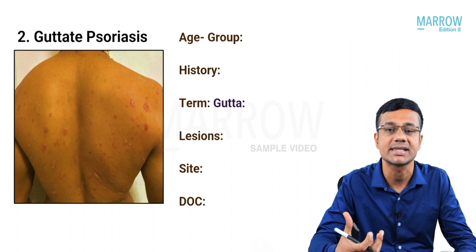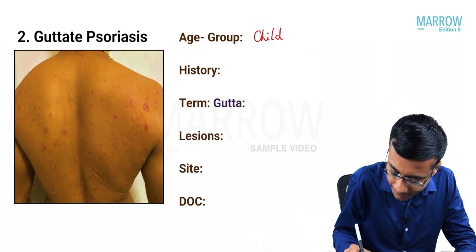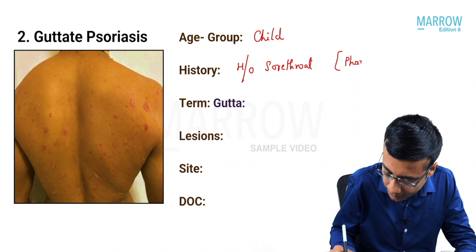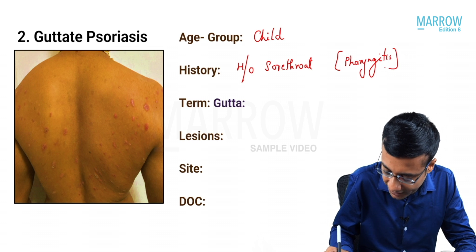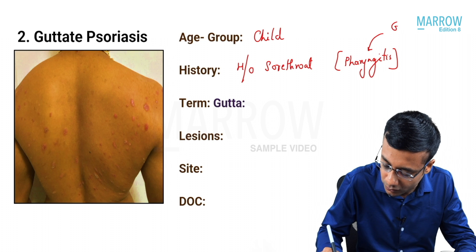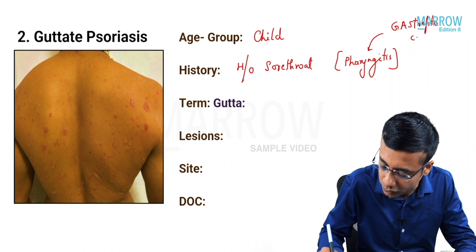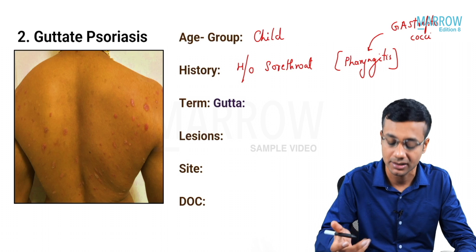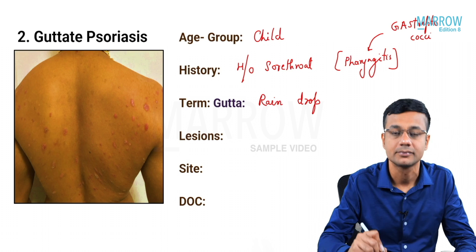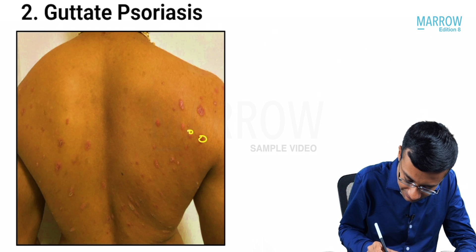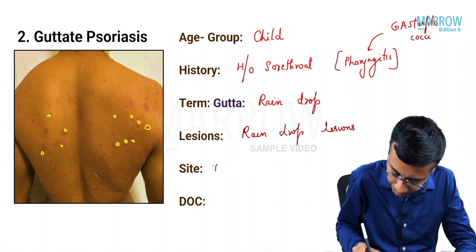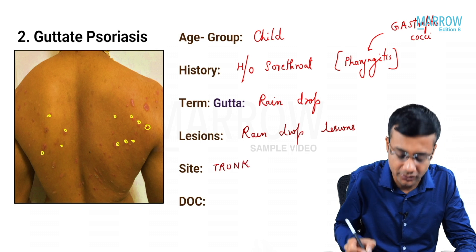Next, we have a form called guttate psoriasis. Guttate psoriasis is a form which is usually seen in children. There will be history of sore throat or pharyngitis. The triggering factor for this is Group A Streptococci. The word 'gutta' means raindrop. As we can see in the image, there are multiple raindrop-like lesions over the trunk, which clinches the diagnosis of guttate psoriasis.